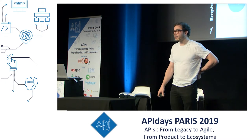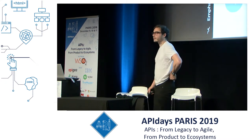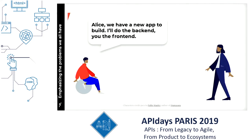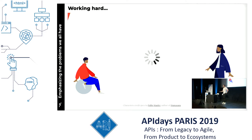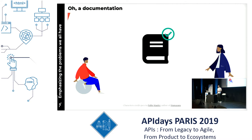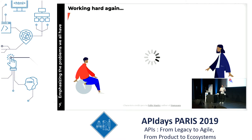Let me introduce you to Bob and Alice, two characters for the day. Bob says to Alice: 'We have a new app to build — I'll do the back-end and you do the front-end,' so they'll have two teams. Alice thinks it sounds great and says, 'Let's design the API.' The next step is they work and come up with documentation of the API, agreeing on the interface.